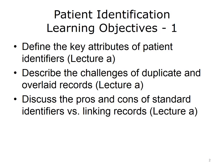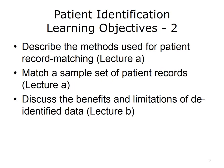The learning objectives for this unit, Patient Identification, are: define the key attributes of patient identifiers; describe the challenges of duplicate and overlaid records; discuss the pros and cons of standard identifiers versus linking records; describe the methods used for patient record matching; match a sample set of patient records; and discuss the benefits and limitations of de-identified data.